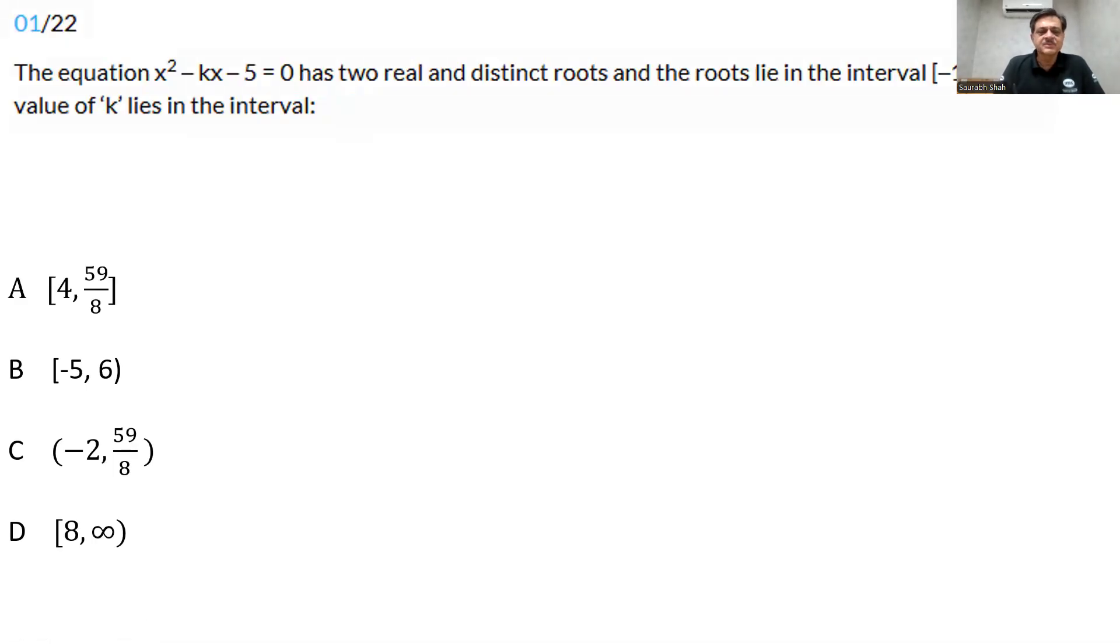Quite an easy question. When do you say the values of the root lie in the interval? The values of the roots is actually the value of x. So the values of the roots lie in the interval minus 1 to 8. That means x lies in the interval minus 1 to 8. So what do we do? Simply put x is equal to minus 1 and x is equal to 8. Our equation is x square minus kx minus 5 is equal to 0.